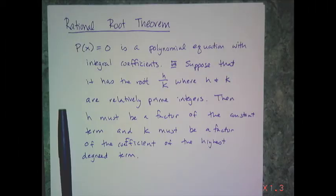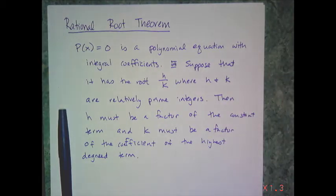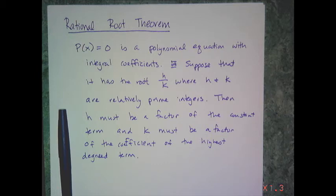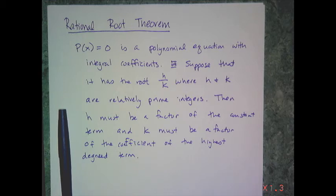If you remember back when we talked about the factor theorem, I wondered if there's a theorem that gives me potential factors to try to synthetically divide out. That theorem is the rational root theorem. It states: if p(x) = 0 is a polynomial equation with integer coefficients and it has a root h/k where h and k are relatively prime integers, then h must be a factor of the constant term and k must be a factor of the leading coefficient.